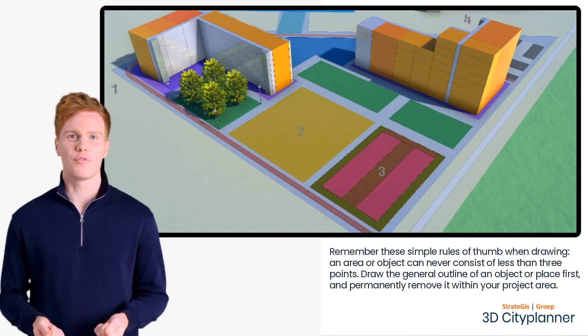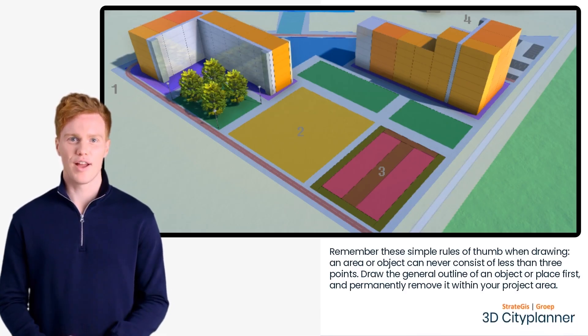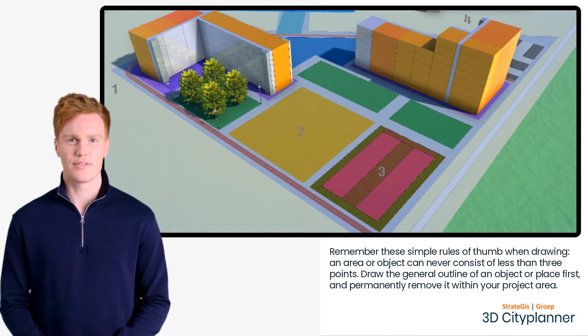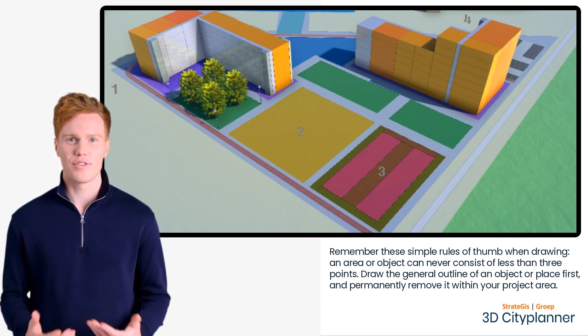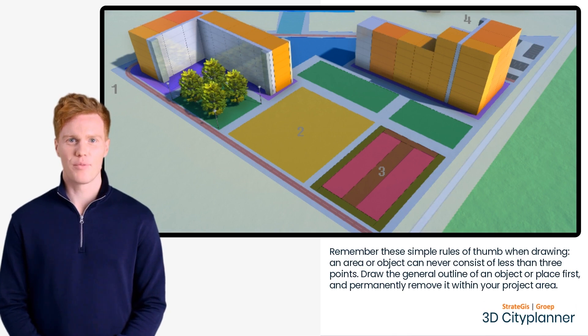Remember these simple rules of thumb when drawing. An area or object can never consist of less than three points. Draw the general outline of an object or place first, and permanently remove it within your project area.